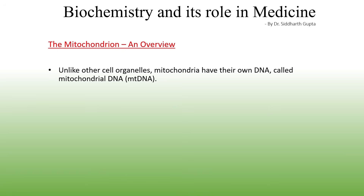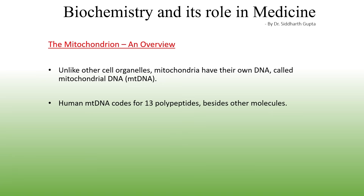Mitochondria are unique among cell organelles because they have their own DNA, called mitochondrial DNA or mtDNA for short. No other organelle besides the nucleus and mitochondria contains genetic material. In human cells, mitochondrial DNA codes for 13 polypeptides, besides some other biomolecules — namely transfer RNAs and ribosomal RNAs.